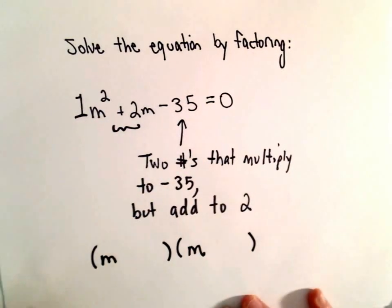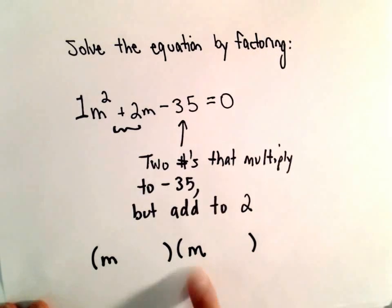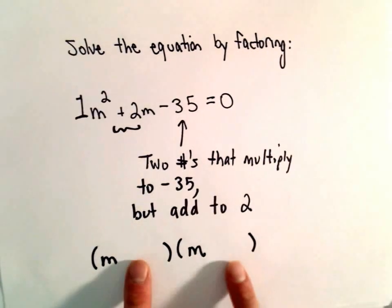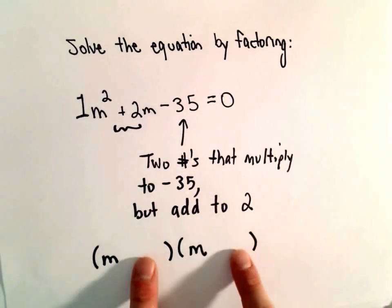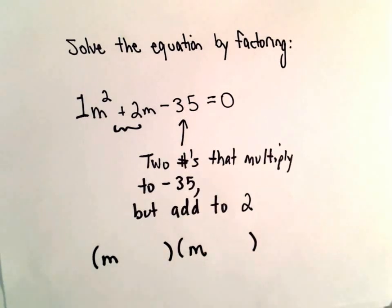So to get m squared, we're going to use an m and an m. And whatever numbers satisfy this requirement, that's what we're going to put in each set of parentheses.